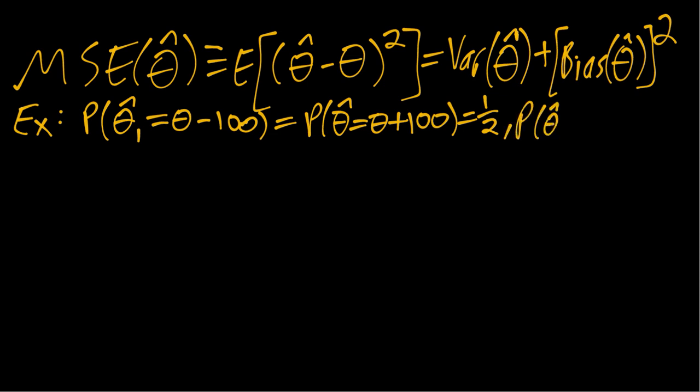And our second estimator, maybe even weirder, but again keeps the math simple, is just always equal to the true value theta plus one. So 100% of the time with probability one, that's the value of theta hat two. So in this case, we'll use that first formula and plug that in.